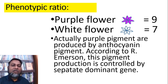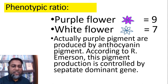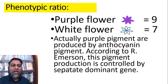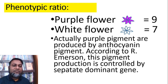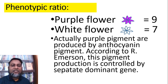This is the deviation of Mendel's Second Law. Mendel's Second Law ratio is 9:3:3:1, whereas complementary genes produce a 9:7 ratio. Actually, purple color pigment is produced by anthocyanin pigment. This pigment production is controlled by separate dominant genes, resulting in many complementary genes that deviate from Mendel's Second Law. I think this class will be very helpful for us, and we can easily understand the complementary gene and the complementary action of genes.